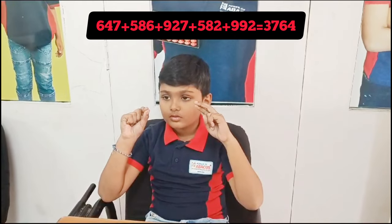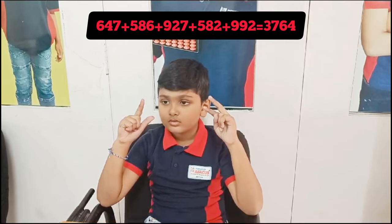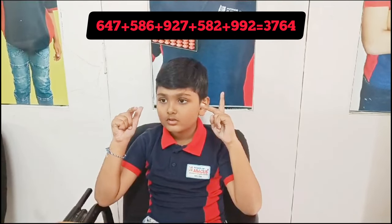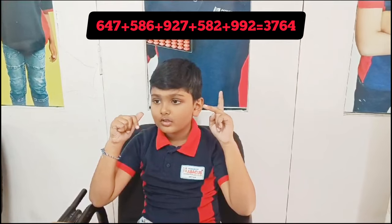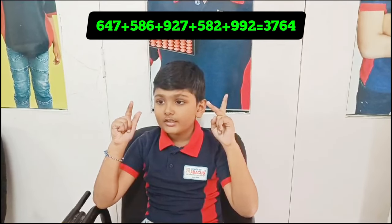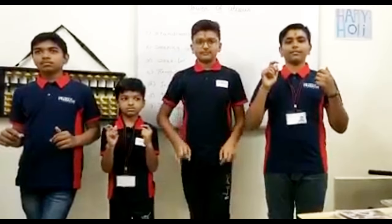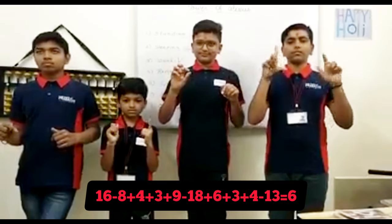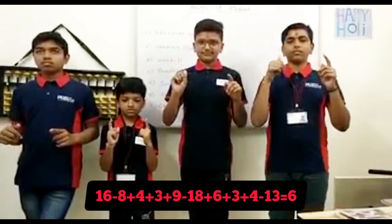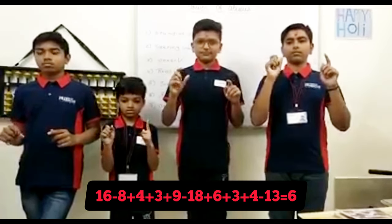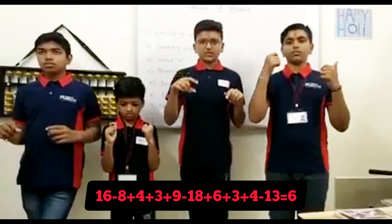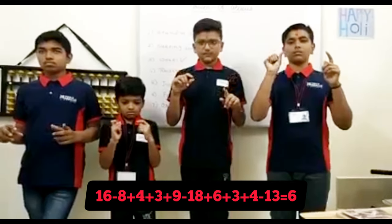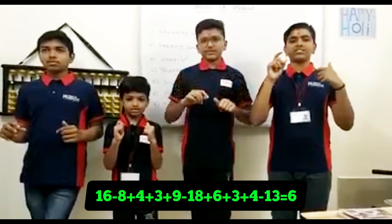647, 586, 957, 532, 992 — answer is 3714. Right. Next: 16, minus 8, 4, 3, 9, 10, 99, minus 18, 6, 3, 4, minus 13 — that is 6. Good.